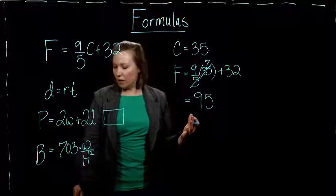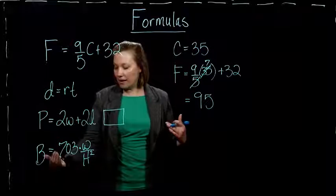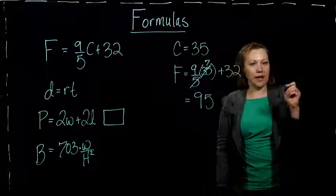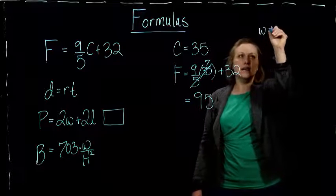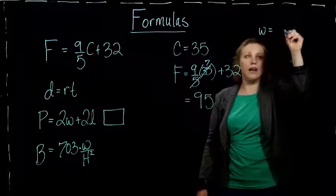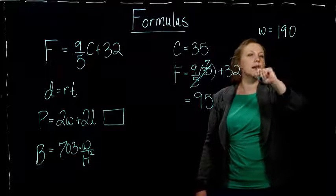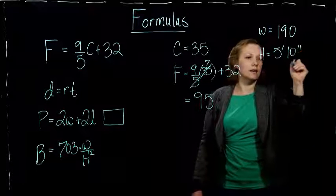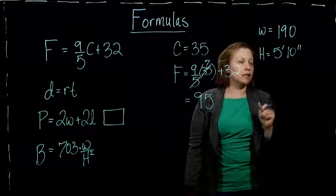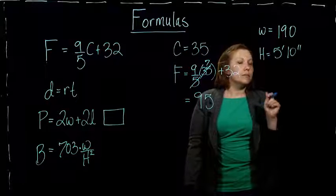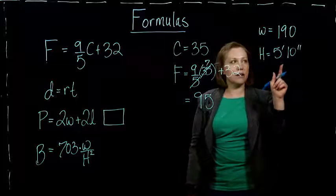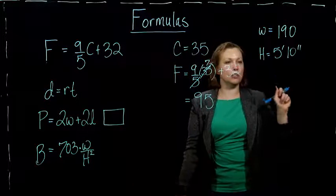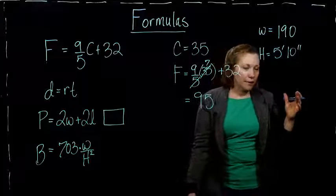We could, if we wanted to calculate our body mass index, suppose you had a friend that had a weight of, let's say, 190 pounds, and a height of 5 feet 10 inches. Usually we measure height in feet and inches. So, there's a problem here with directly using our formula. Our formula, the height isn't supposed to be in feet and inches, it's supposed to just be in inches.